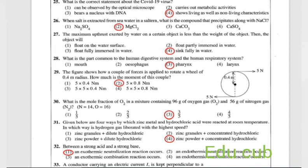Question 30: what is the mole fraction of oxygen in a mixture containing 96 grams of oxygen gas and 46 grams of nitrogen gas? You have to calculate this one. Answer will be 3 over 5. Third answer is correct.